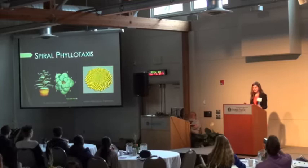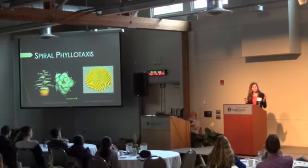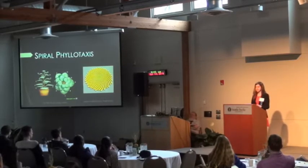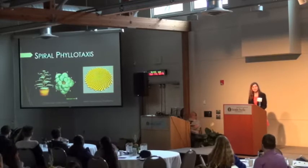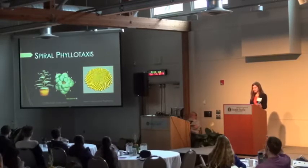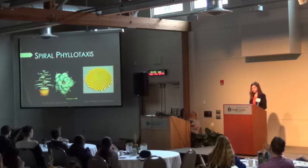Mathematically, Spiral Phyllotaxis occurs when the angle between two units emerging from a center, called the divergence angle, is equal to 360 degrees divided by the irrational number phi, also known as the golden ratio. Separating units by this angle mathematically minimizes the overlap between them and maximizes the distance between the units.